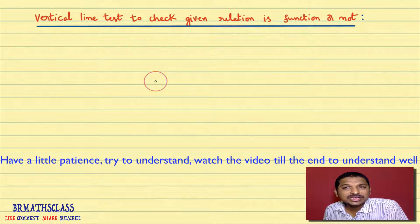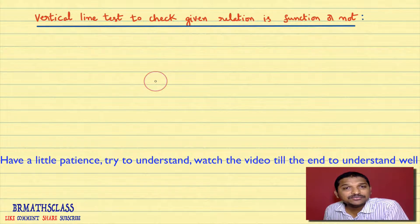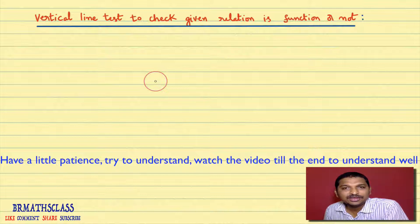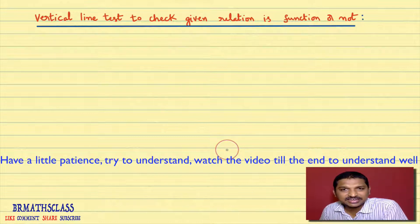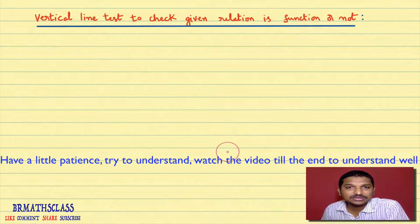In class 1, what did we learn? We learned the definition of a function. A relation f from A to B is said to be a function if for every element in set A, there exists a unique element in set B. That is what we learned in class 1 with more number of examples.